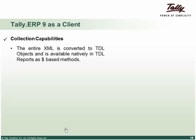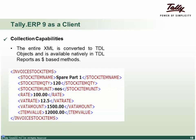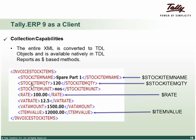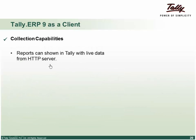The entire XML is converted into a TDL object and is natively available as a TDL report. All XML tag names that contain values can be prefixed with a dollar sign, indicating they are methods. For example: $StockItemName, $StockItemAlias, $Rate, $AdRate, $VATAmount, and $ItemValue. Reports can then be shown in Tally with live data from the HTTP server.